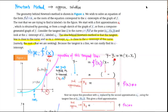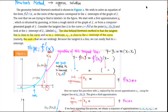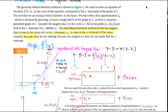A point on the tangent line is (x₁, f(x₁)). So the equation of the tangent line is: y − f(x₁) = f′(x₁)(x − x₁). That is the equation for this tangent line.